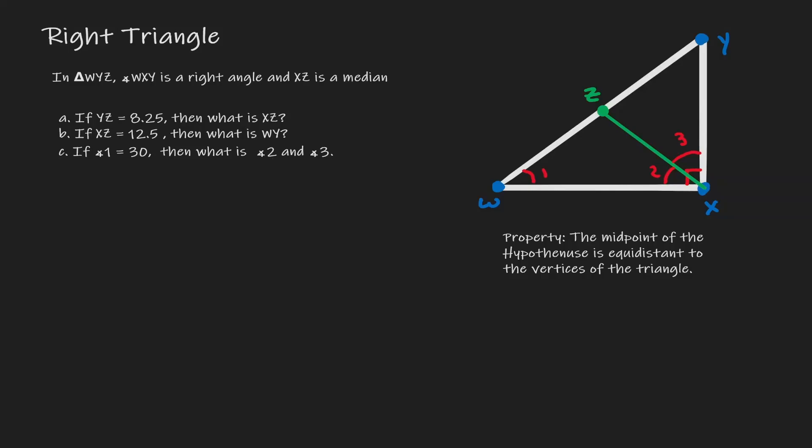In this example we want to see how we can use properties of right triangles to solve unknowns. One property we're going to concentrate on is that the midpoint of the hypotenuse is equidistant to the vertices of the triangle.